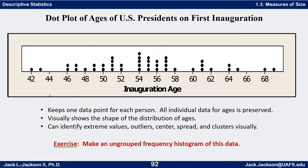Here's basically what the dot plot should look like. That 57 right there is Washington's dot, then 61 for Adams, and then back to another 57 for Jefferson and so forth. We have dots all along here. Notice we can see there's one at 69, one at 68, three at 61, one at 42, and so forth. We've lost the information of which president goes with which dot, but if we're only concerned with the ages we have all the data right here.